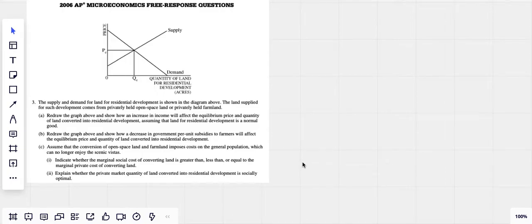Six, micro FRQ number three, mostly supply and demand but also a little externality question here. The supply and demand for land for residential development is shown in the diagram above. The land supplied for such development comes from privately held open space land or privately held farmland. Redraw the graph above and show how an increase in income will affect the price and quantity of land converted. Assume the land for residential development is a normal good.